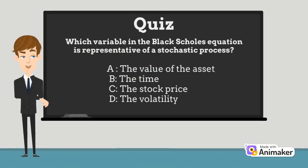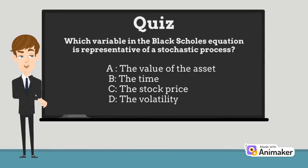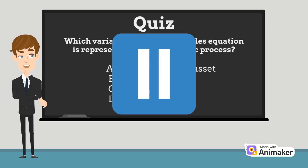Time for a short question. Which variable in the Black Scholes equation is representative of a stochastic process? A. The value of the asset. B. The time. C. The stock price. D. The volatility. Pause the video and try to answer.